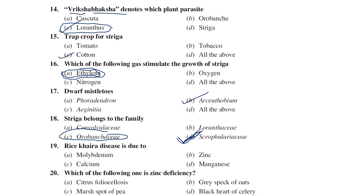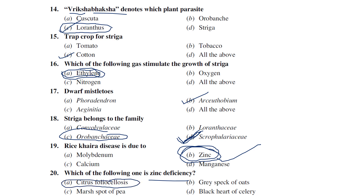Rice Khaira disease is due to zinc deficiency — a very important question. Among the given options for zinc deficiency disease, citrus foliar sclerosis is also caused by zinc deficiency, along with rice Khaira disease. So these two diseases are caused by zinc deficiency.